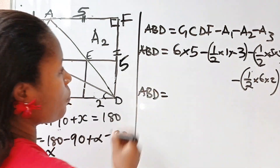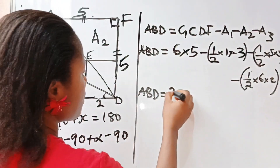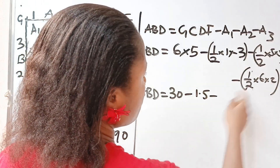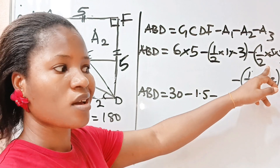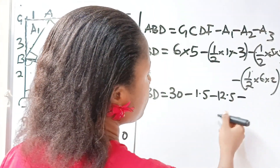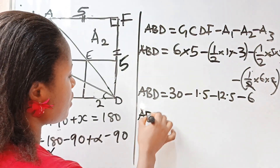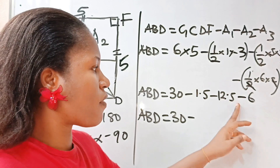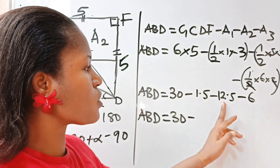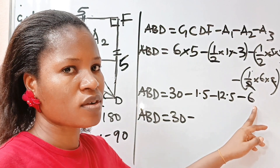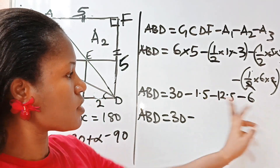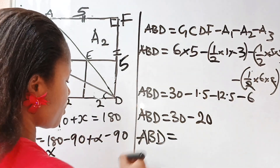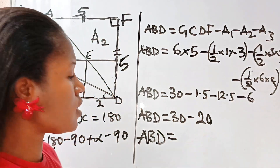So area of ABD equals 6 times 5, which is 30, minus half times 1 times 3, which is 1.5, minus half times 5 times 5, which is 12.5, minus half times 6 times 2, which is 6. Adding the subtractions: 1.5 plus 12.5 is 14, plus 6 gives 20. So area of triangle ABD equals 30 minus 20, which is 10 square units.